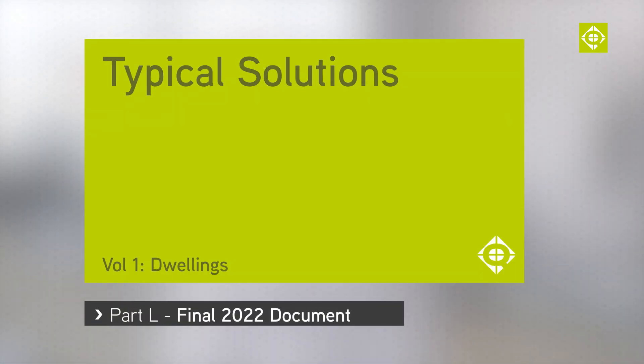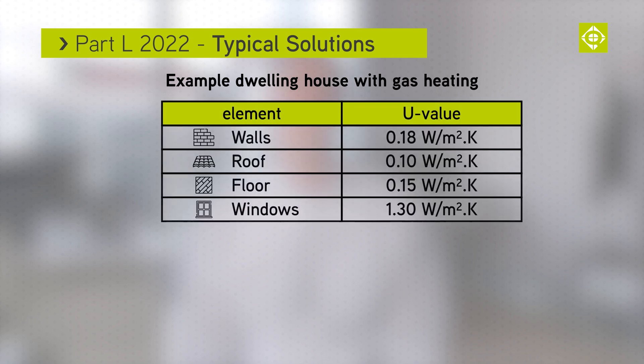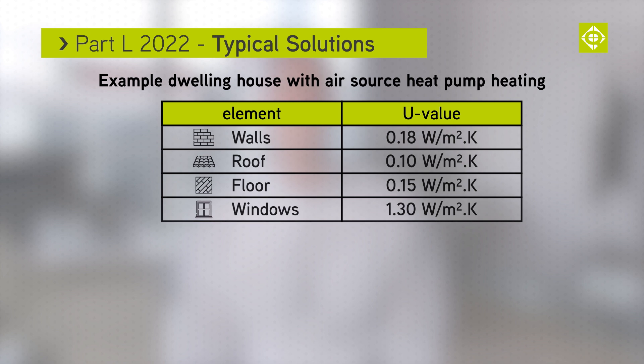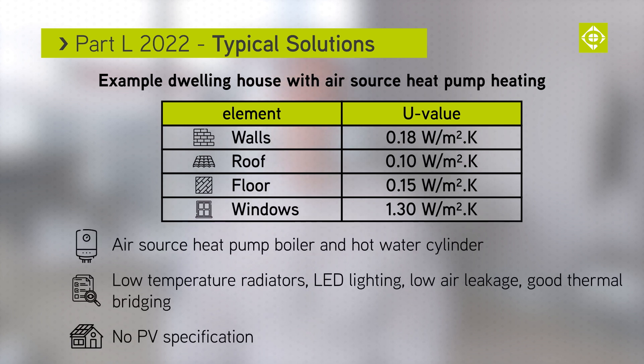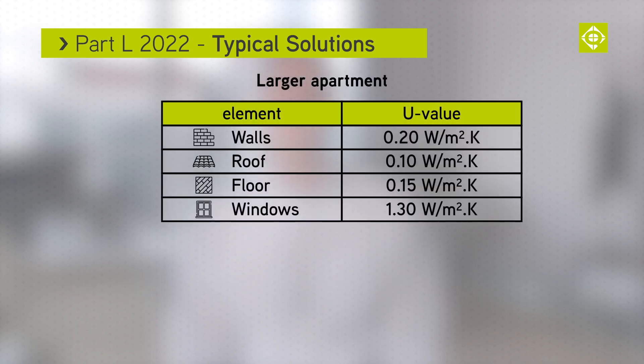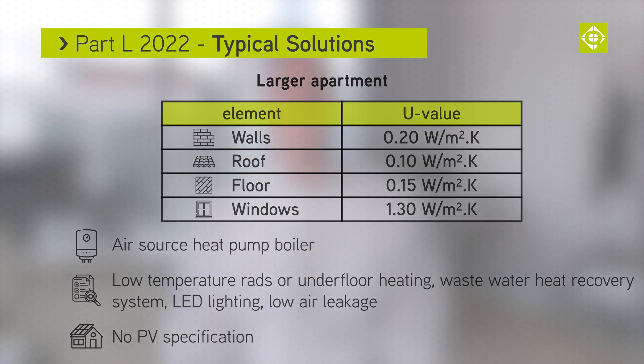Not using low temperature heating will make the SAP assessment more difficult to pass. Typical examples are now shown on screen — these include a dwelling house with gas central heating, a dwelling house with an air source heat pump heating system, a small apartment, and larger apartments. Remember these are all just examples. There will always be the ability to trade off one renewable system for another, but it's very unlikely you'll be able to achieve a pass without using some form of renewable system.